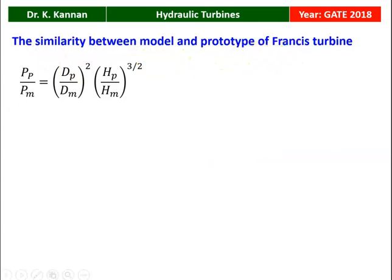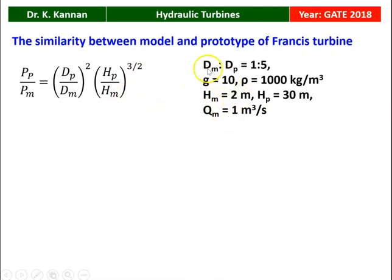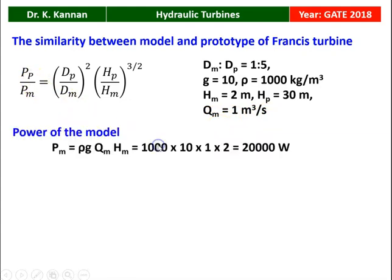The similarity between model and prototype of a Francis turbine: power of the prototype divided by power of the model equals the diameter ratio (diameter of prototype divided by diameter of model) to the power 2, multiplied by the head ratio (head of prototype divided by head of model) to the power 3/2. Given: scale ratio diameter of model to diameter of prototype is 1/5, G = 10 m/s², density = 1000 kg/m³, head of model = 2 m, head of prototype = 30 m, discharge of model = 1 m³/s. Power of model = ρGQ_M × H_M = 1000 × 10 × 1 × 2 = 20,000 watts.